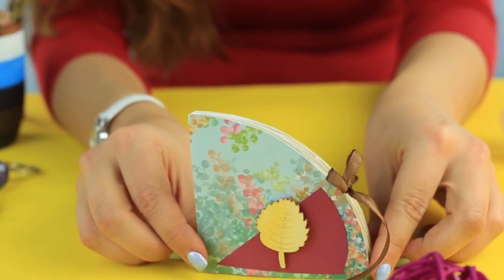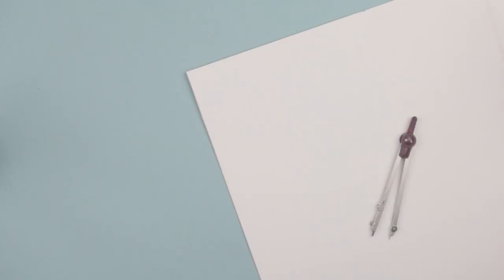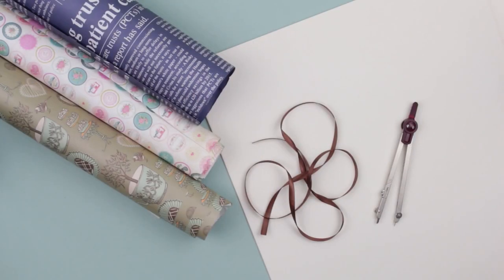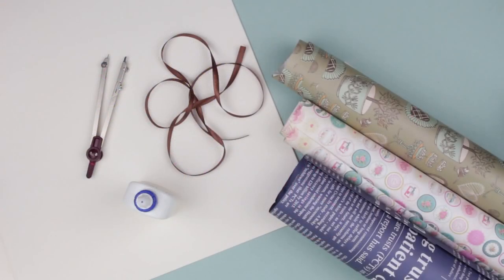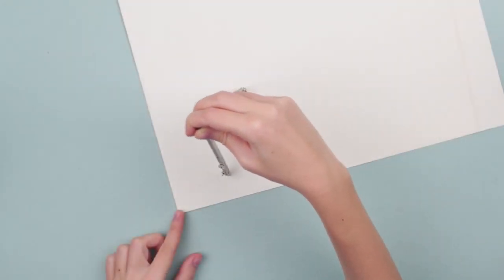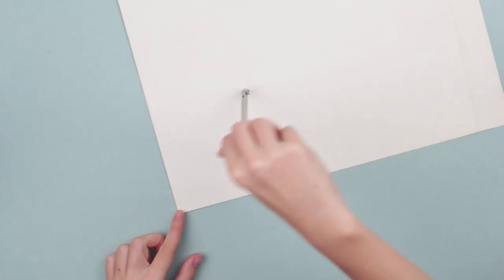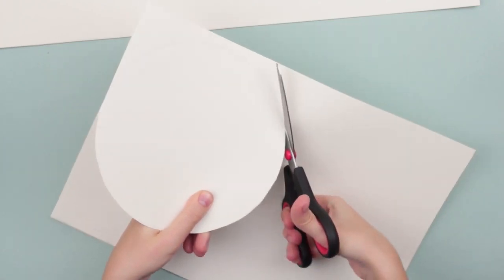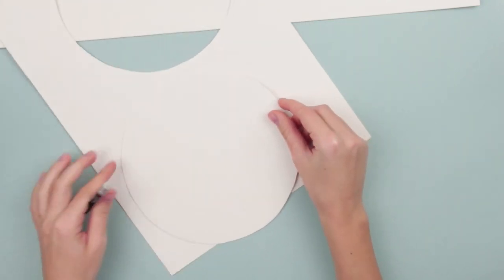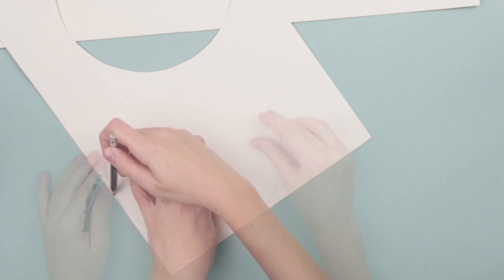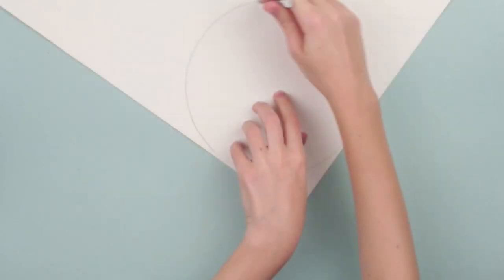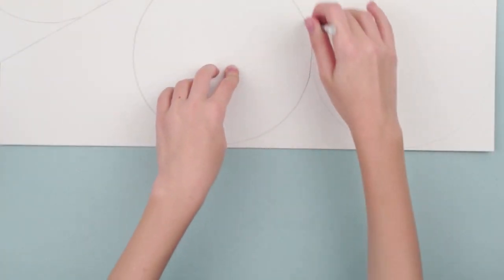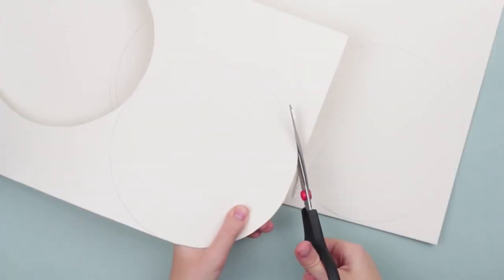Today we'll make an unusual mini photo album. We need white paper, compasses, thin ribbon, wrapping or scrapbooking paper, and white glue. Take a white paper sheet and draw a circle using a compass. Draw the circle near the edge to fit other elements on the paper. Cut out with scissors. Place the cut circle on the paper and trace. We need 4 equal details. Cut it out.